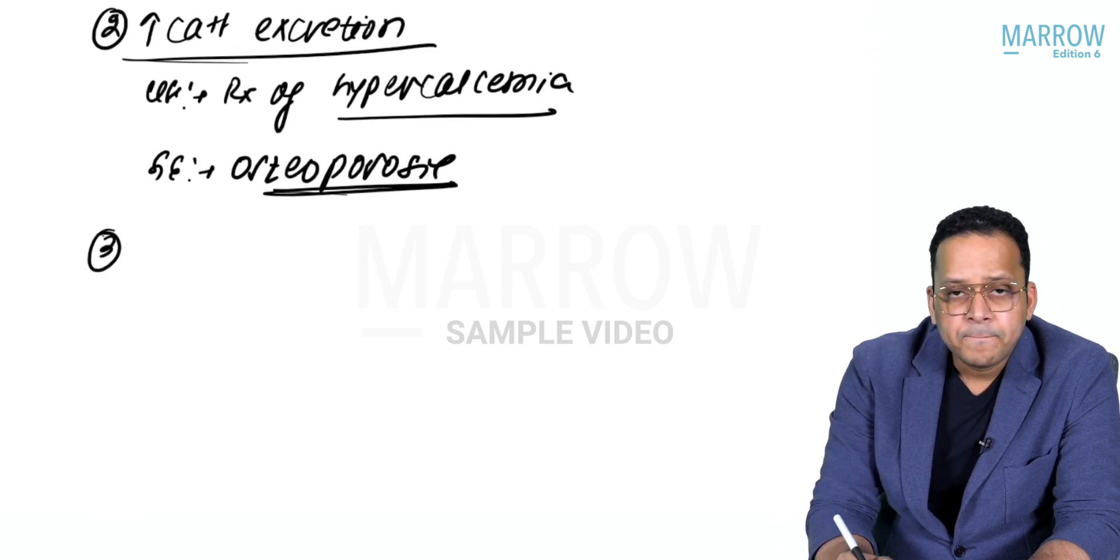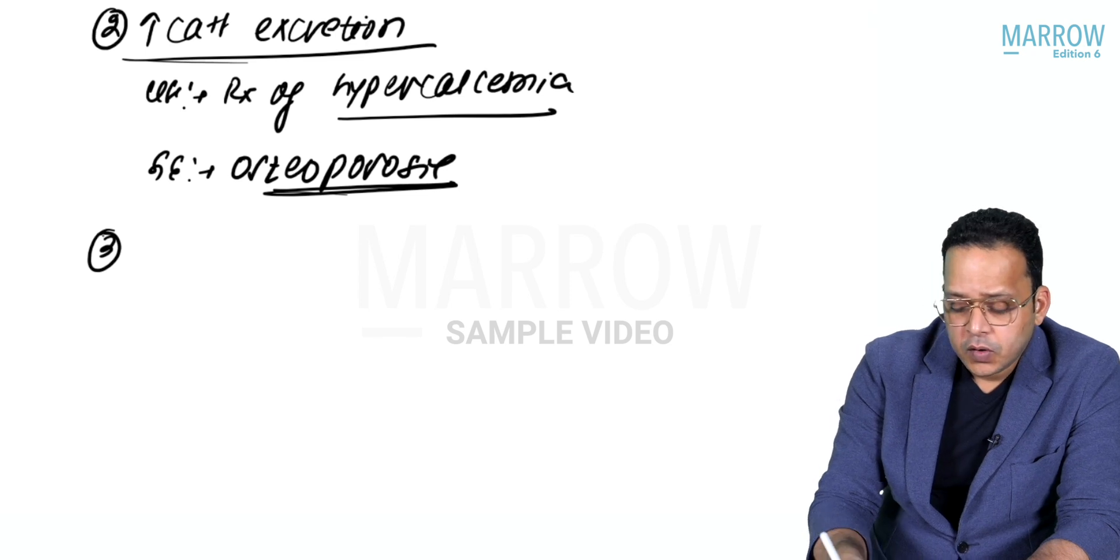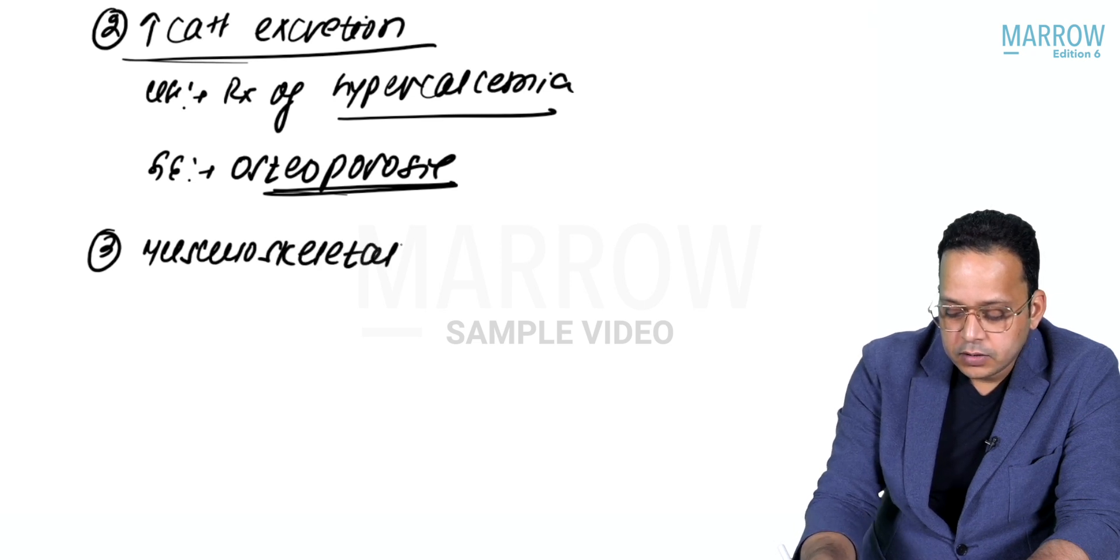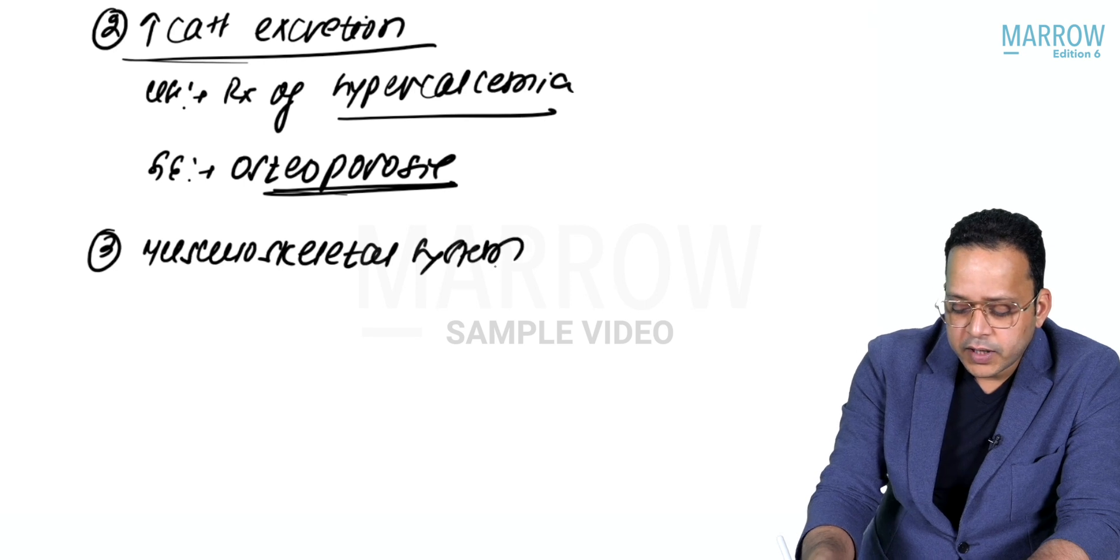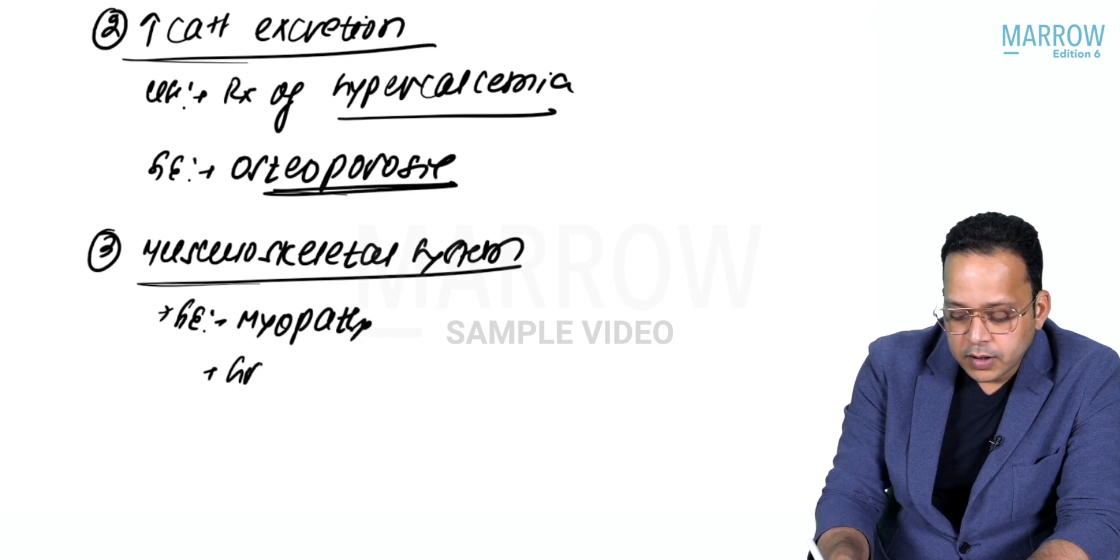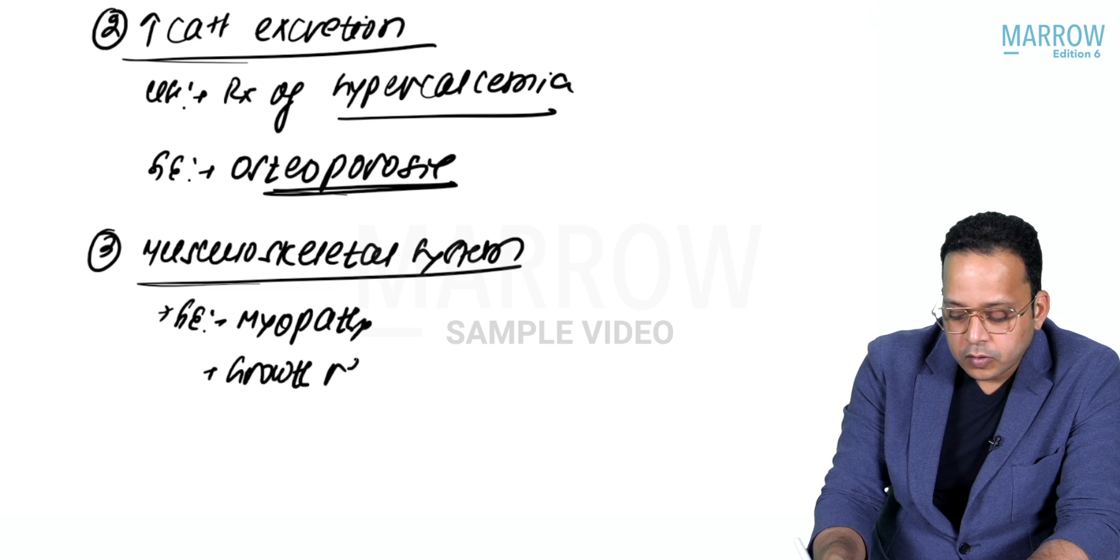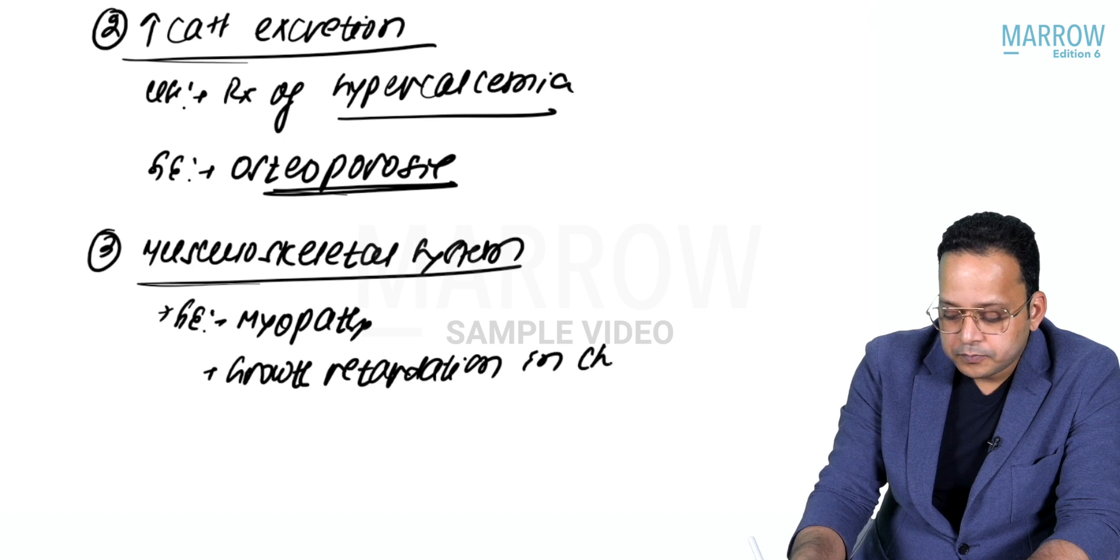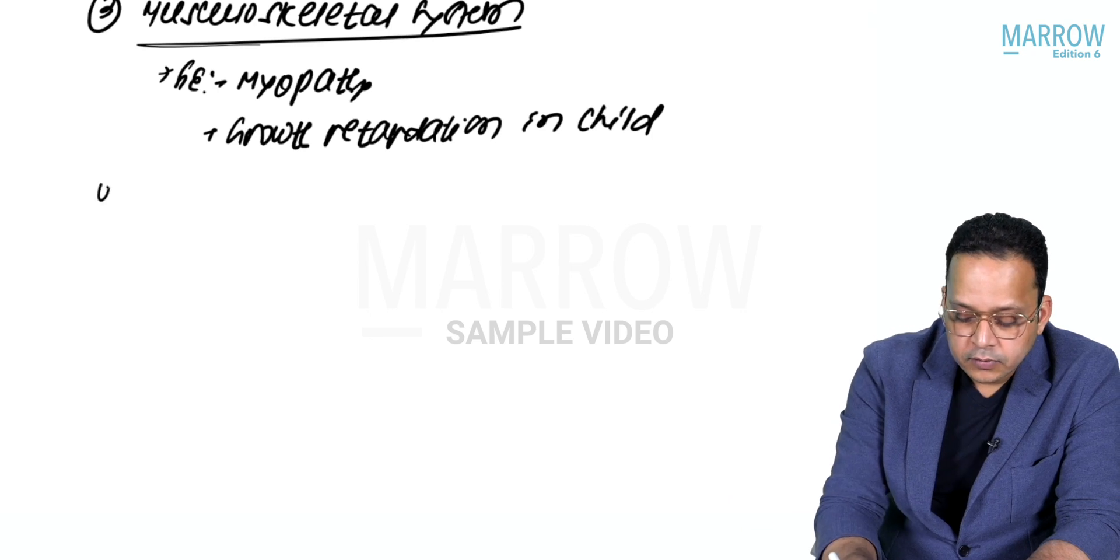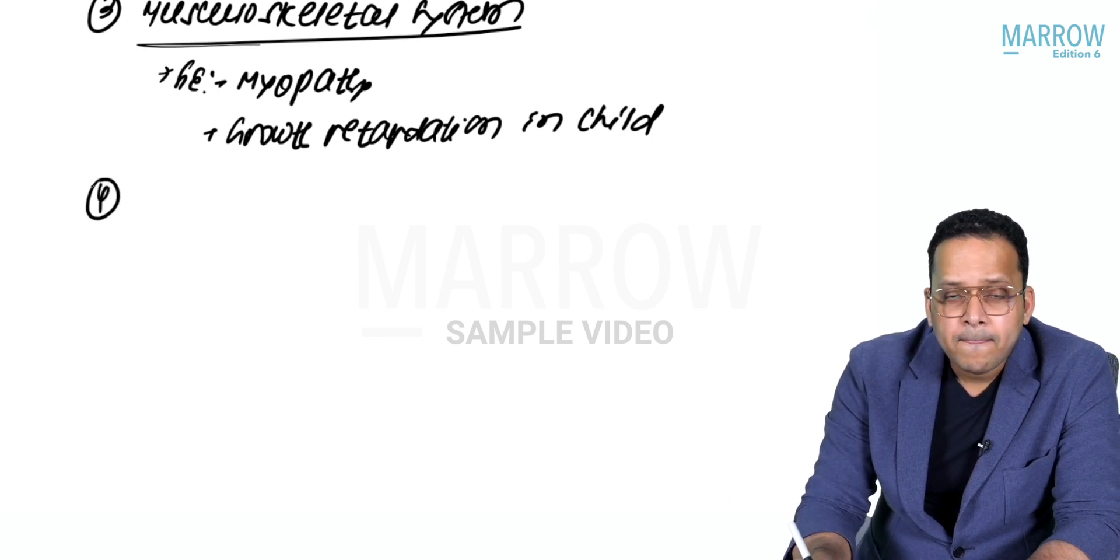Number three, what is the effect on your musculoskeletal system? They cause osteoporosis. Apart from that, they act upon your muscles - they can cause myopathy as well as growth retardation in children.